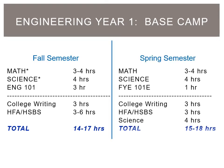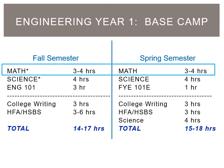Your math placement is important and it affects many of the other courses you will take your first semester. Most students will take a math course in the fall and in the spring semesters, starting with Calculus A or MA 171. This is the first required math course for all engineering degree programs.